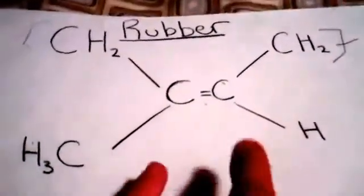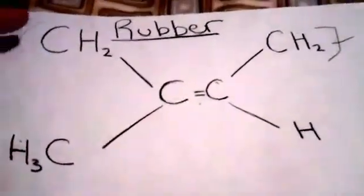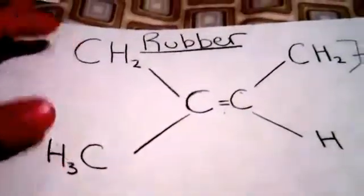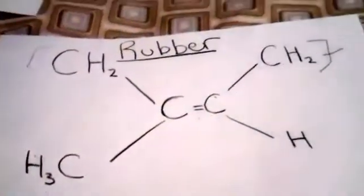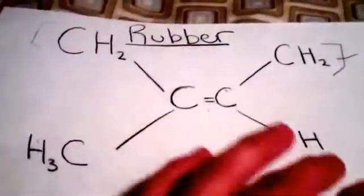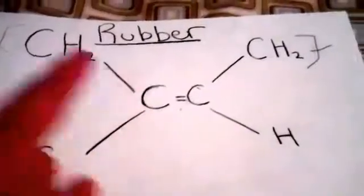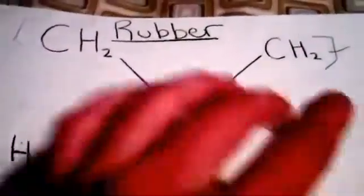Rubber is two carbons double bonded with a hydrogen. These are methyl groups right here. These two signs right there and there show that this whole thing just keeps on connecting. So this would connect to here and so on.